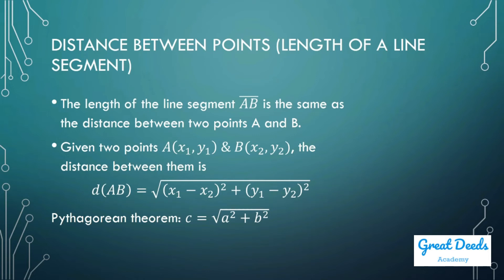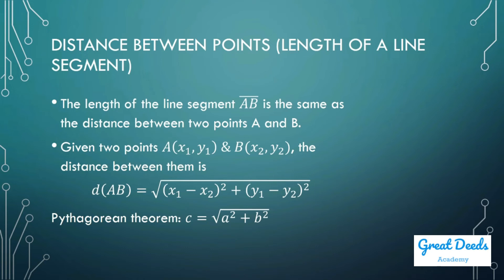The distance formula is similar in form to the Pythagorean theorem. For a right triangle, the hypotenuse c equals the square root of a squared plus b squared. In fact, the distance formula is the version of the Pythagorean theorem in the rectangular coordinate system. When we use the tools of the rectangular coordinate system, the Pythagorean formula will appear in this form.